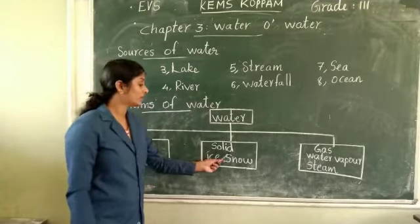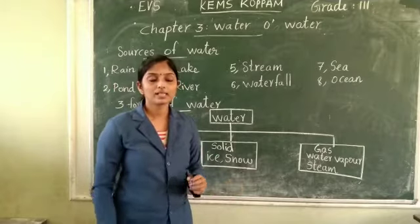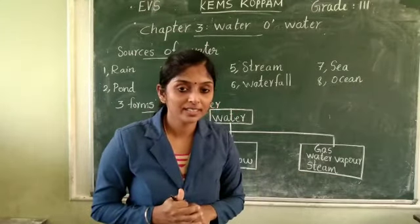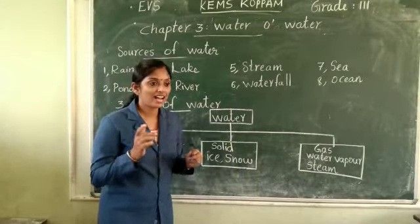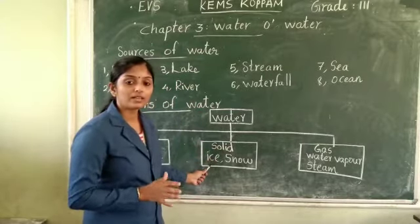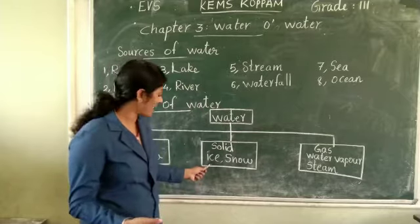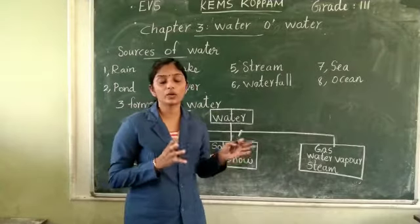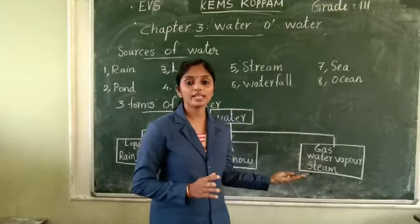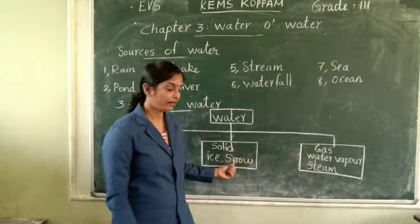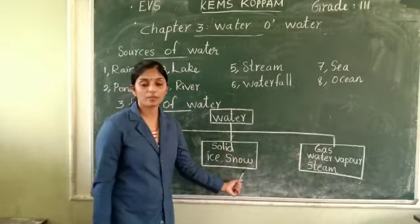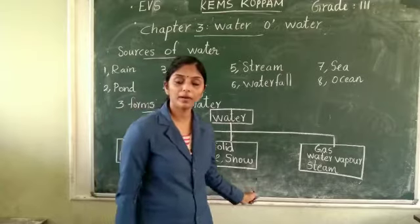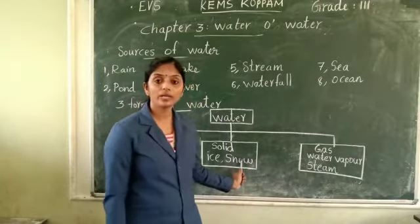Next is the solid form of water. We can see the solid form in refrigerators — ice. Ice, snow, and hail are examples of solid form. When water freezes at zero degrees Celsius, it will change its form to solid. That is called the solid form of water.